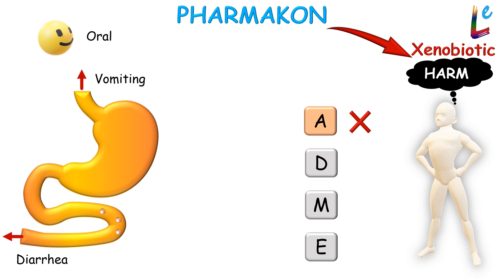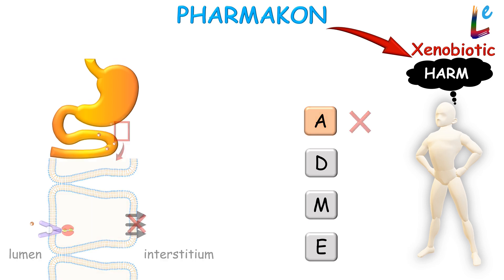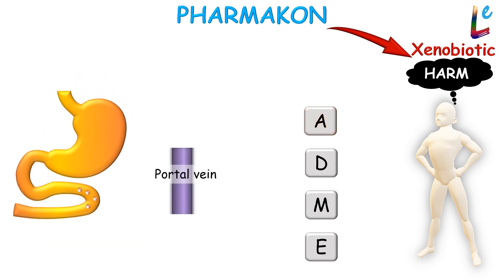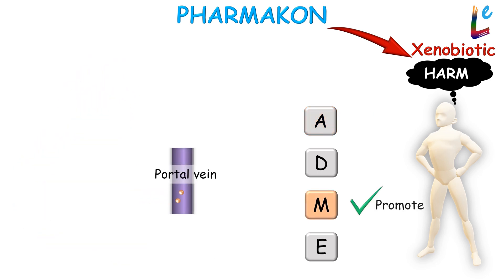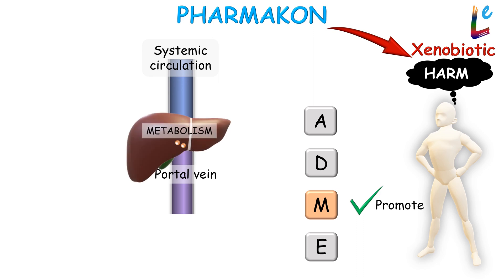Why? To prevent the drug from crossing the intestinal epithelium. Even if the drug manages to cross the apical surface of the intestinal epithelium, efflux transporters can prevent its entry into portal circulation. A drug that enters the portal circulation can still be prevented from reaching the systemic circulation by elimination through hepatic metabolism.